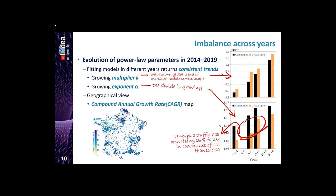The same result is shown by computing the compound annual growth rate map for urban units between 2014 and 2019. Big cities are represented by black dots, and we can clearly see that growth of per capita traffic consumption in big cities has increased by 75%, while in smaller cities growth is around 30 to 50%.